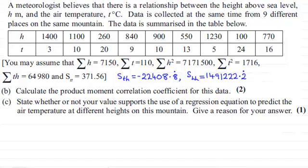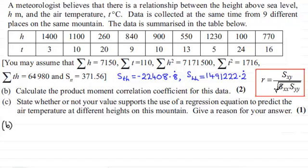Welcome back. You can always fast forward if you just want to check the numerical answers, or I'll take you slowly through the methods. When it comes to working out the product moment correlation coefficient, you should be familiar with this formula, which you'll normally see in your formula book: R is equal to SXY divided by the square root of SXX times SYY.